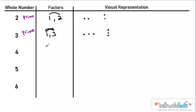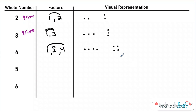Now let's do 4. There are two different ways to make 4: you could do 1 times 4 or you could do 2 times 2. In the factor rainbow you have 1 times 4 or 4 times 1, and 2 times 2. So you could have two different arrays, and you can see that these have different dimensions. So 4 is going to be a composite number because it has three or more factors.